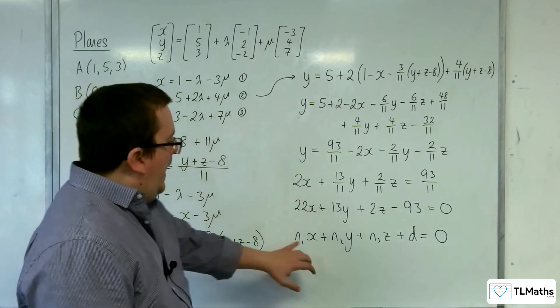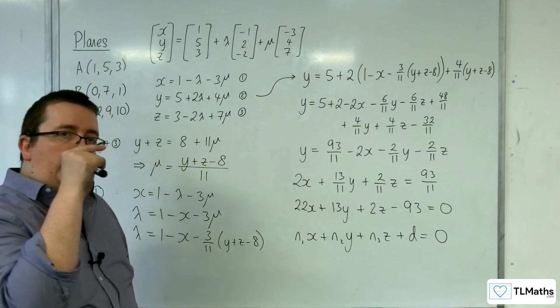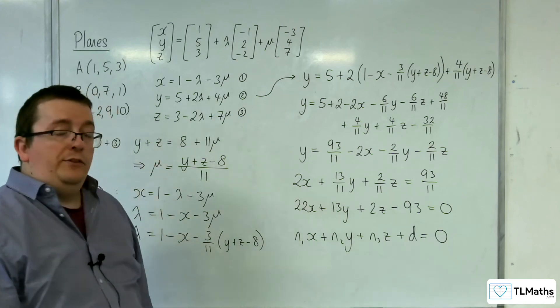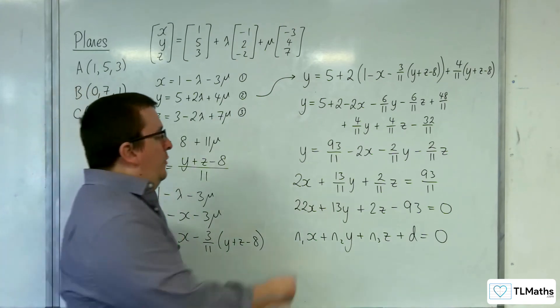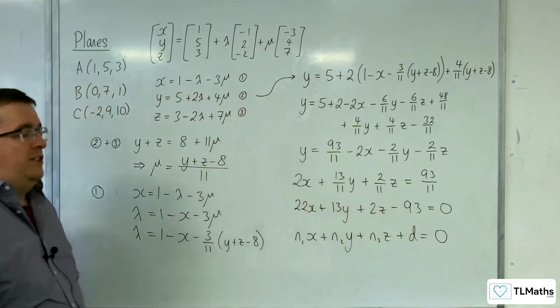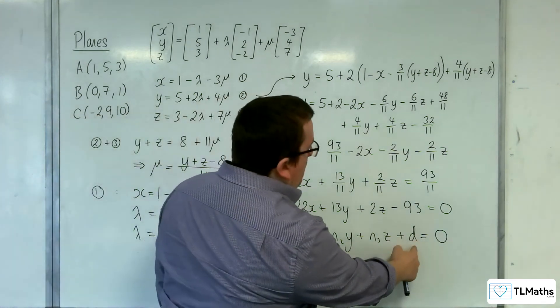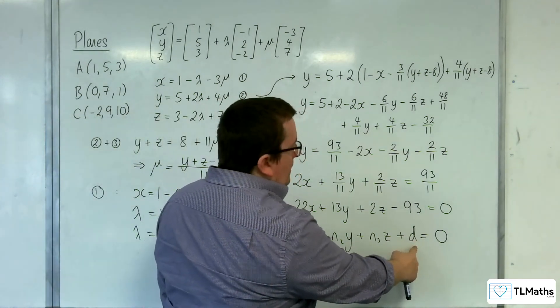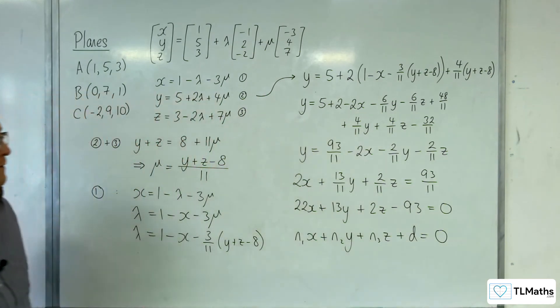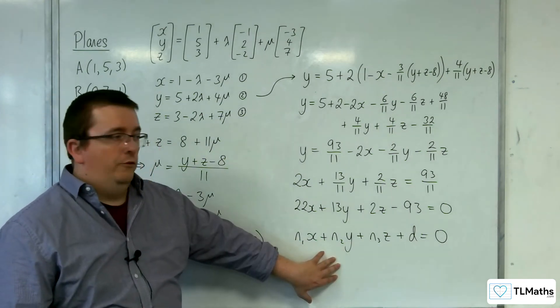Where n1, n2, n3 is a vector that is perpendicular to the plane. It is the normal vector to the plane. So 22, 13, 2 is a normal vector to the plane. And d was equal to minus a dotted with n, using the scalar product. So this is the Cartesian equation for a plane.